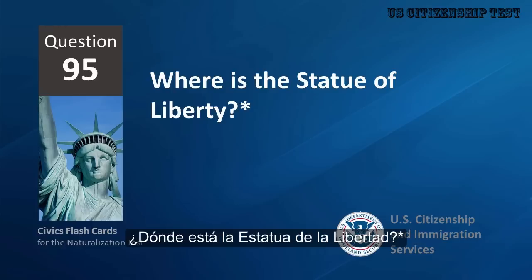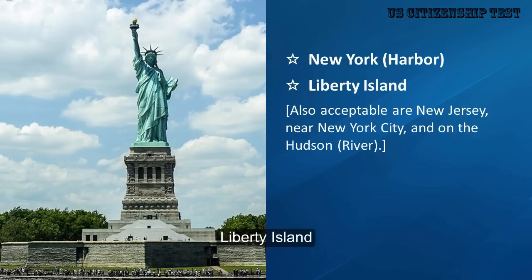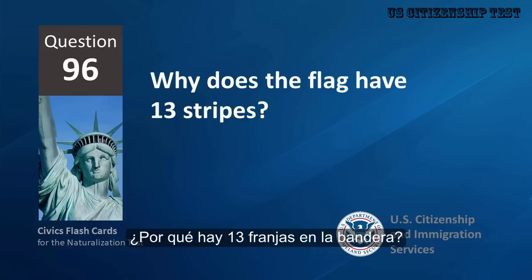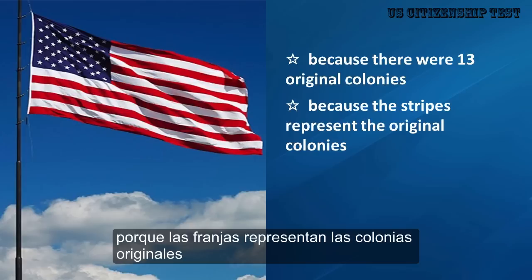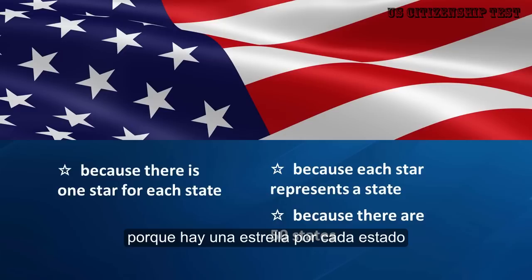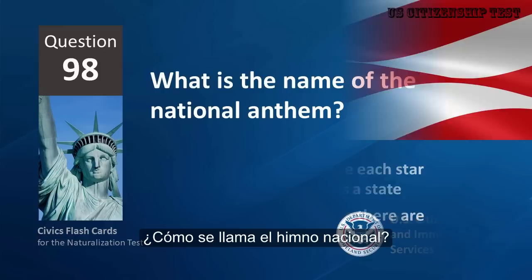Where is the Statue of Liberty? New York Harbor, Liberty Island, Manhattan. Also acceptable: New Jersey, near New York City, and on the Hudson River. Why does the flag have 13 stripes? Because the stripes represent the original colonies. Why does the flag have 50 stars? Because there is one star for each state, because each star represents a state, because there are 50 states.